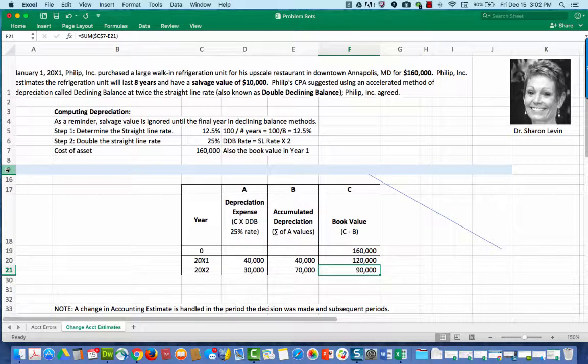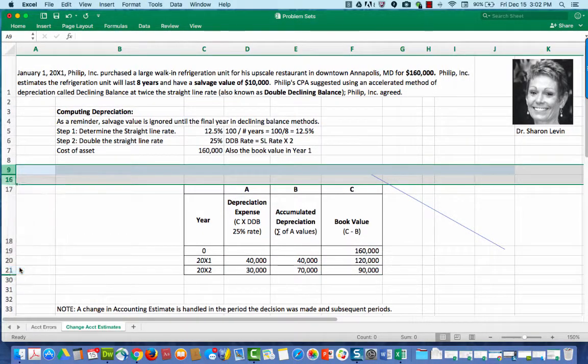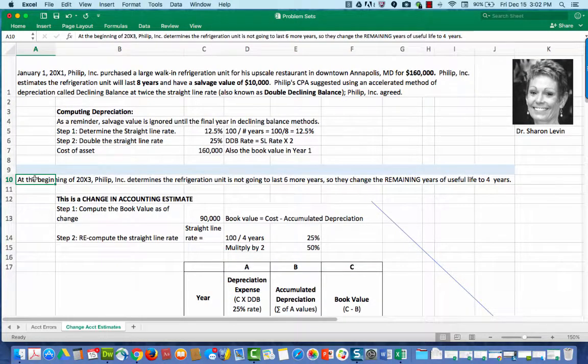Now what happens? Two years have passed and now we're in the third year. At the beginning of 2000X3, Phillip Incorporated determines the refrigeration is not going to last six more years. So they changed the remaining years of useful life to four years. We had an original useful life of eight years, but after two years, we determined that this refrigeration unit is unlikely to last six more years.